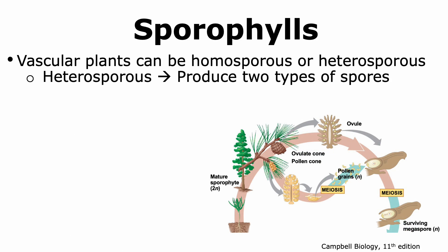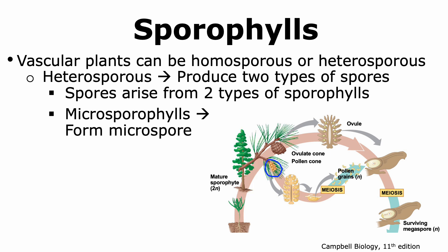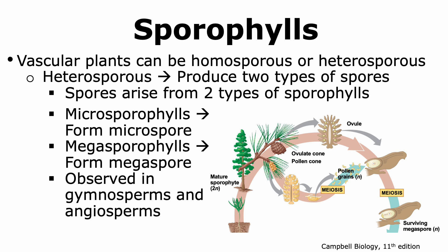Heterosporous vascular plants are those that produce two types of spores. The sporophyte makes two types of sporophylls. One is the microsporophyll, which will form the microspore. The microspore will give rise to the male gametophyte, which will in turn make the male gamete. Another type is the megasporophyll. The megasporophyll will ultimately give rise to the megaspore, which will in turn give rise to the female gamete. Heterospory is observed in all gymnosperms and angiosperms, and some lycophytes and monilophytes.